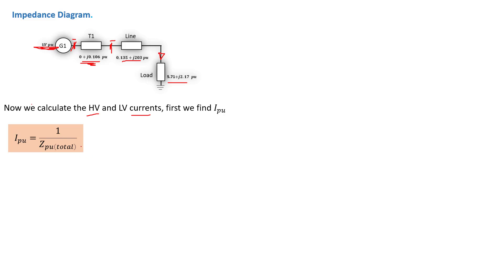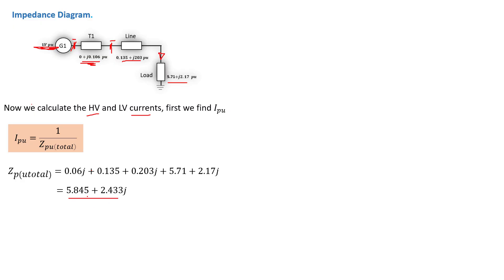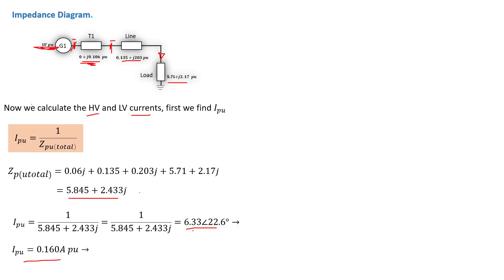To calculate I per unit we first need the total Z per unit. We add the real parts and imaginary parts together and find Z per unit total equals 5.845 + 2.433j. Then I per unit equals 1 divided by Z per unit total. Converting to rectangular form, we find I per unit equals 0.160 amp per unit.